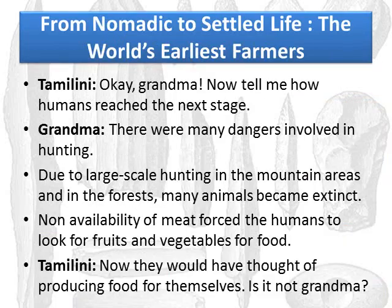Tamilini asks: 'Grandma, now tell me how humans reached the next stage.' Grandma says there were many dangers involved in hunting. Due to large-scale hunting in mountain areas and forests, many animals became extinct. For example, when they hunted deer continuously, the deer population would get extinct. The non-availability of meat forced humans to look for fruits and vegetables for food. So they stopped eating meat and started eating fruits and vegetables.